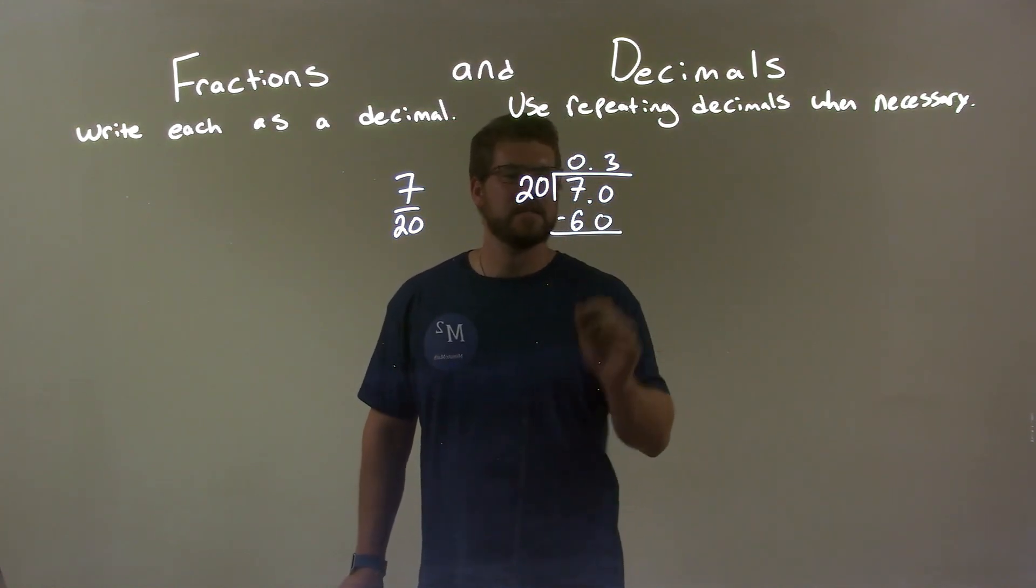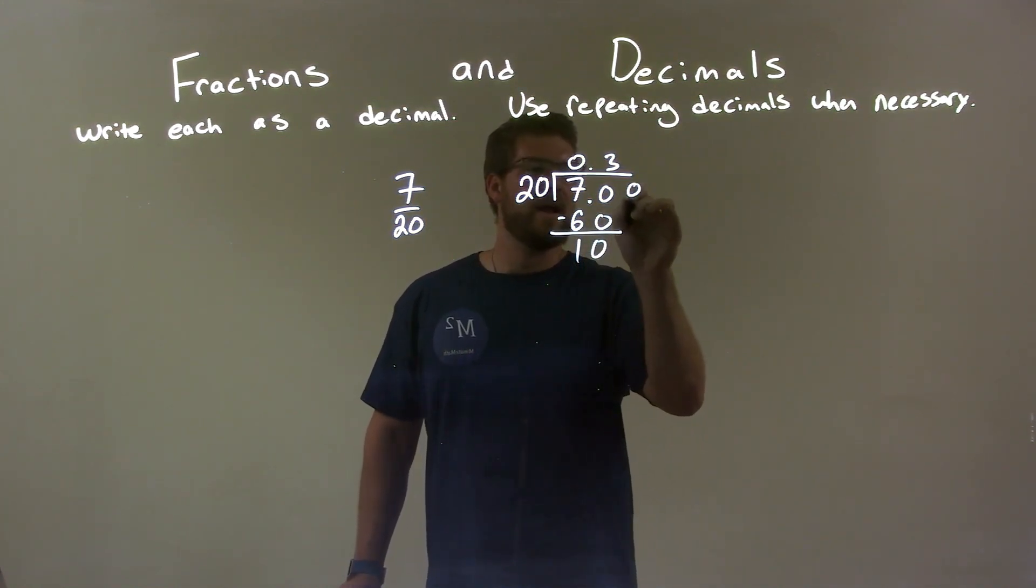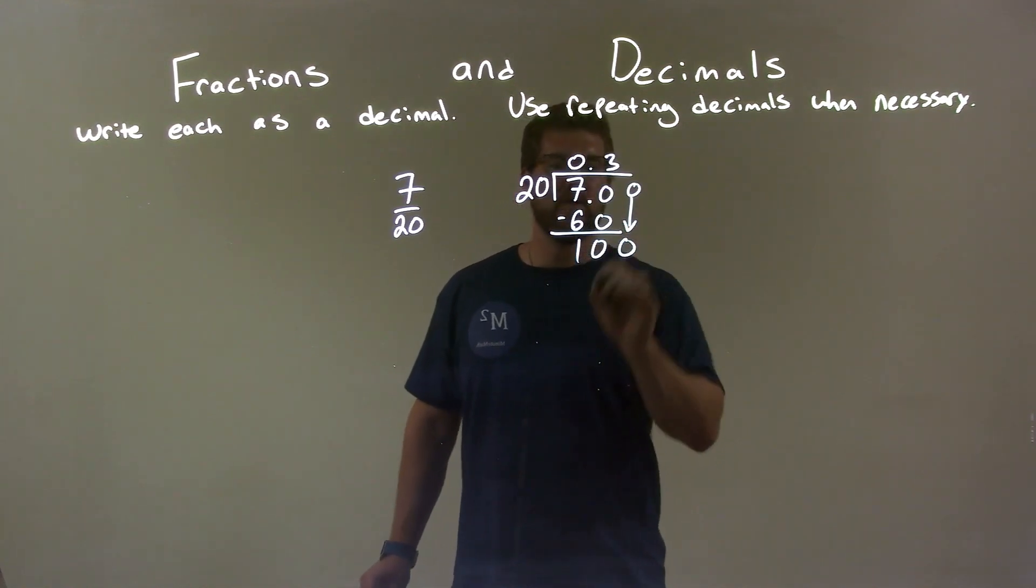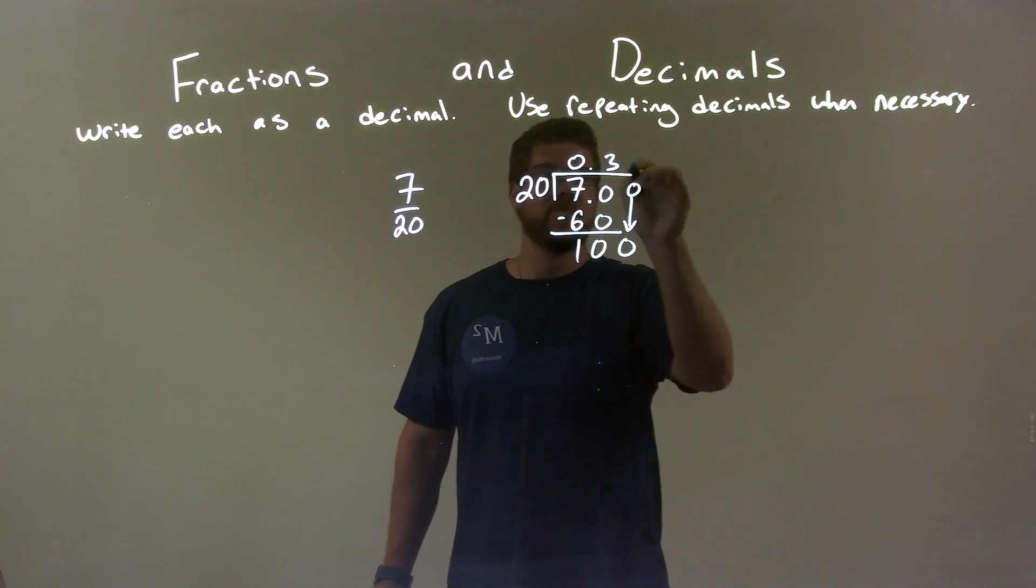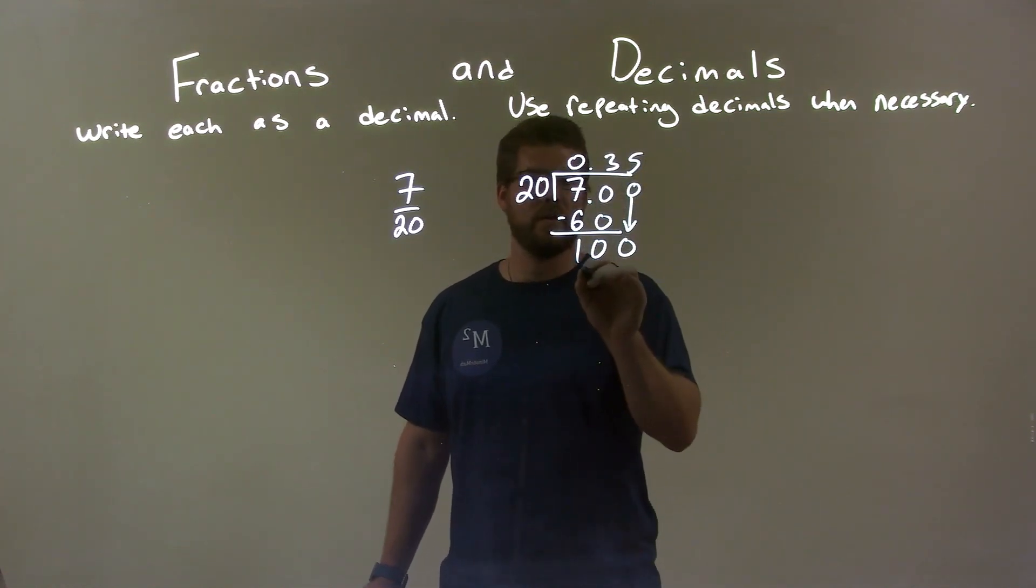We subtract that, 70 minus 60 is 10. We add an extra 0, bring that down, and we have 100. How many times does 20 go into 100? That's 5 times. 5 times 20 is 100. We subtract that and add a 0.